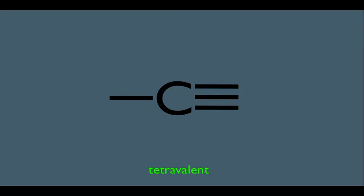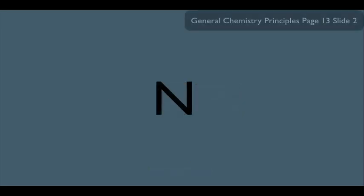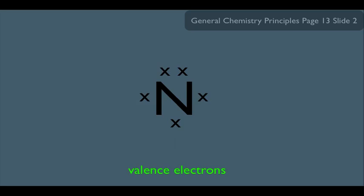Remember, carbon is not the only atom extensively studied in organic chemistry. There's also nitrogen. On the periodic table, nitrogen is in column five, so it has five valence electrons. We're going to see nitrogen make three bonds and have one lone pair. These three bonds make it trivalent.